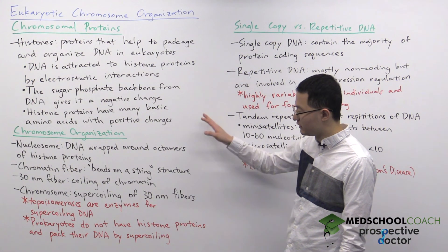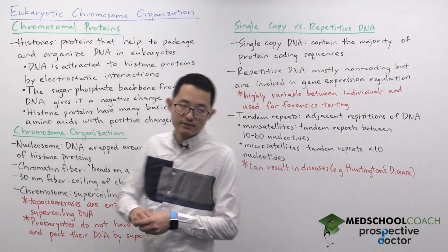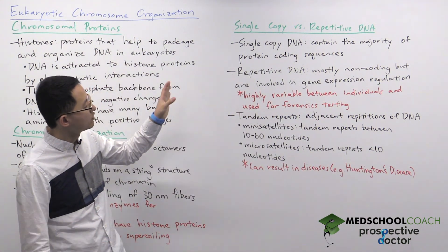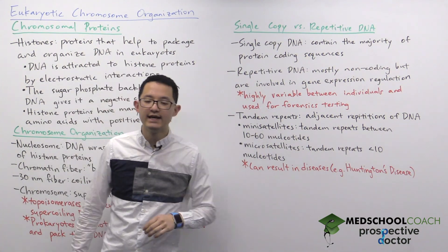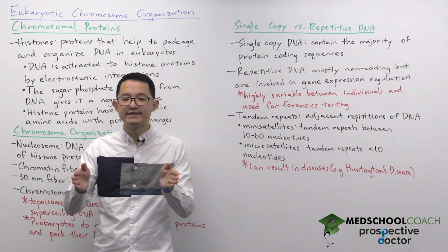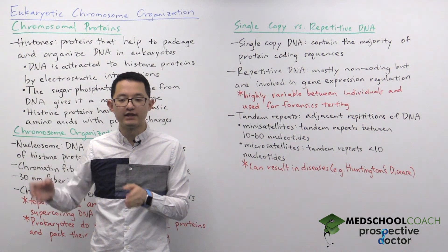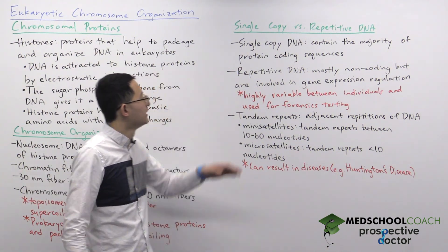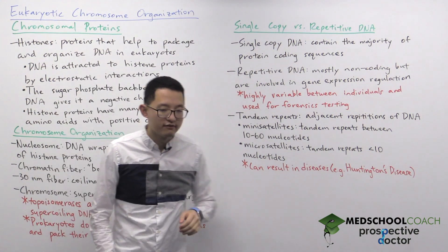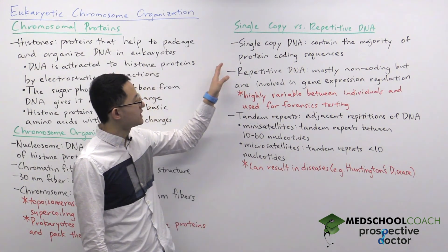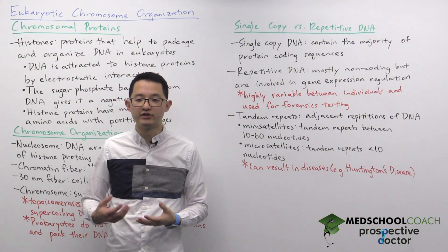Now that we understand how chromosomes are organized, let's move on to discuss single copy versus repetitive DNA. Single copy DNA is a nucleotide sequence that is unique within a genome — it's not duplicated and there aren't copies in other regions. Single copy DNA is important because it contains the majority of coding sequences, which code for the different proteins that a cell will express.